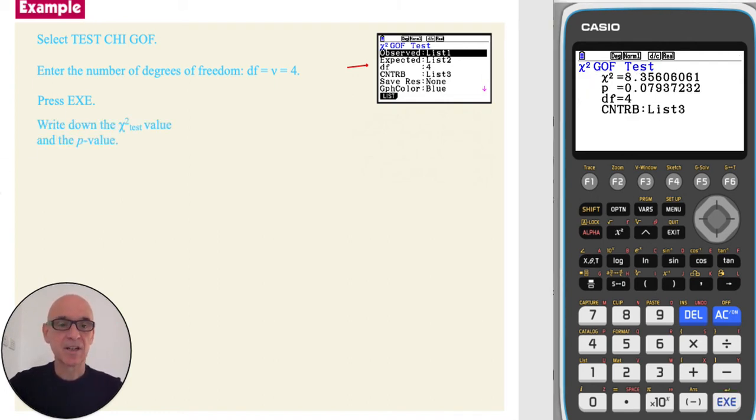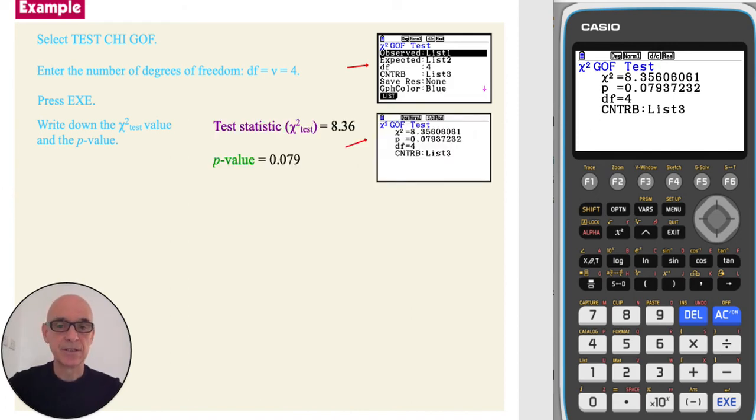Write down the chi-squared test statistic and the p-value, rounding the values to three significant figures.